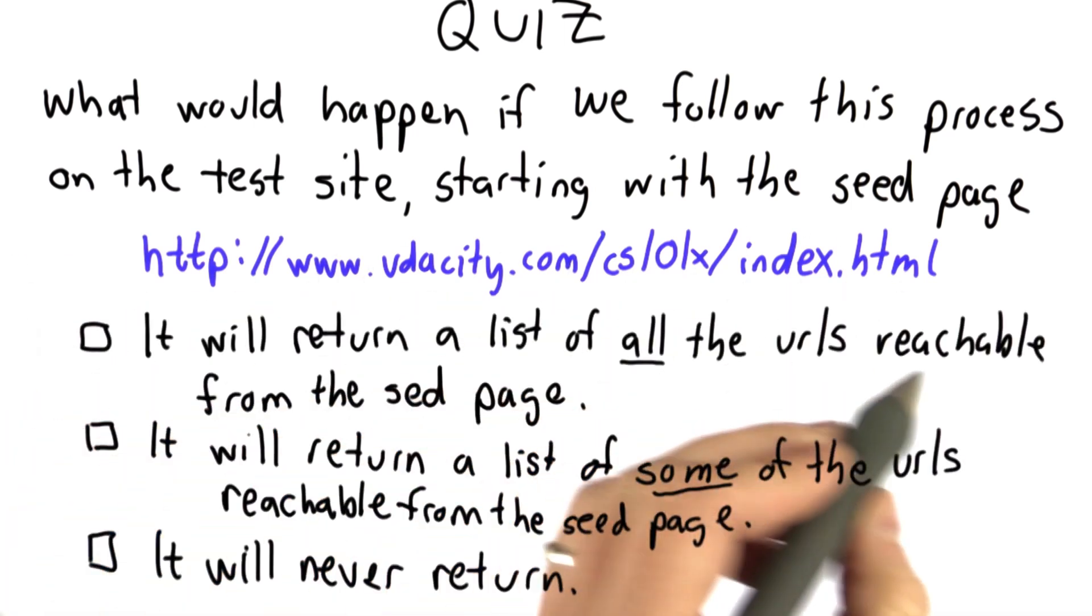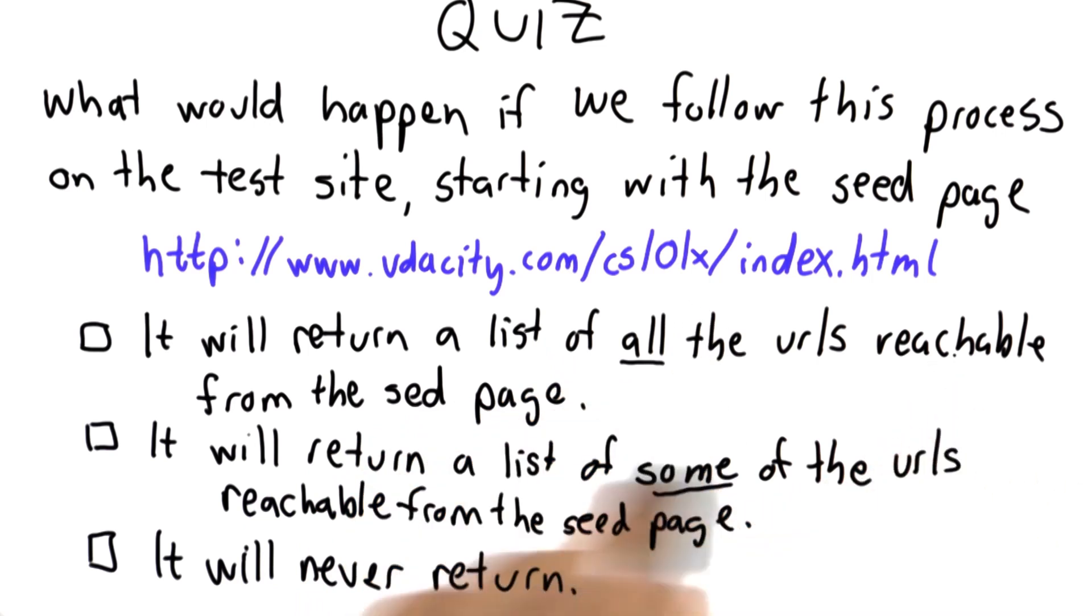So the choices are: it will return a list of all the URLs that can be reached starting from the seed page. The second choice, it will return a list of some of the URLs, but not all of them, that are reachable from the seed page. And the third choice, it will never return.